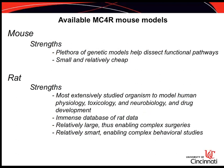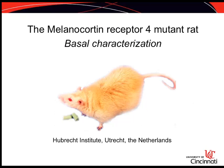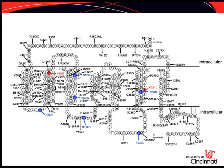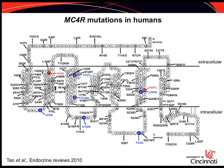A plethora of genetic mouse models helped dissect the functional pathway where MC4R is involved. The strength of the mouse is that it's small and relatively cheap. The strength of using a rat model would be that rats are the most extensively studied organism to model human physiology, toxicology, and neurobiology, resulting in an immense database of rat data. Furthermore, the rat is relatively large, enabling more complex surgeries compared to the mouse, and also relatively smart, enabling complex behavioral studies. We thought the MC4R mutant rat is a good addition to the existing mouse models — not a replacement.